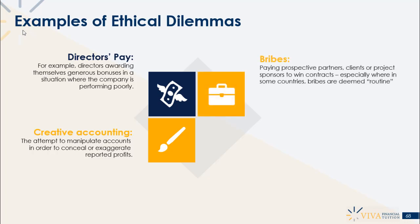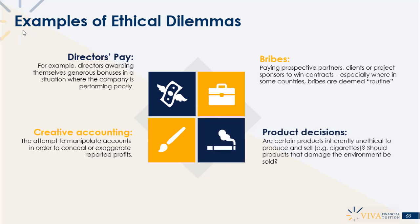Bribes are another case of potential ethical dilemmas — paying prospective partners, clients, or project sponsors to win contracts, especially in countries where bribes are deemed routine or acceptable. The question becomes: which ethical principles do you comply with — those of the foreign country or those of your native country? Product decisions also sometimes raise ethical dilemmas: are certain products inherently unethical to produce and sell? Cigarettes are a commonly cited example, as are products that damage the environment.